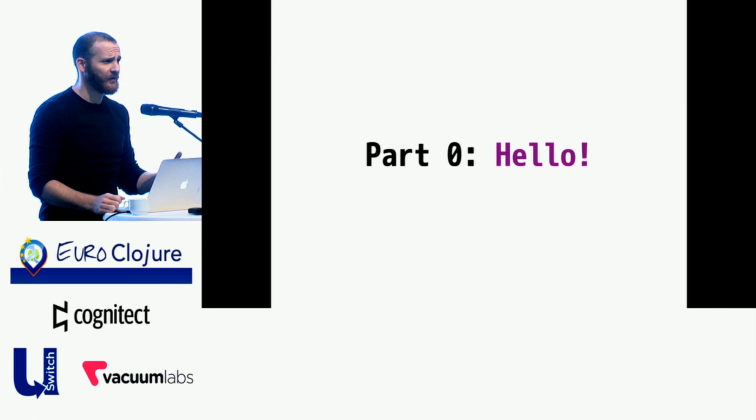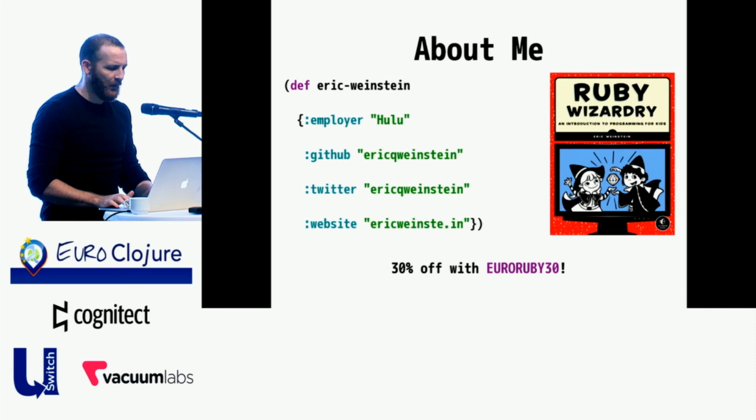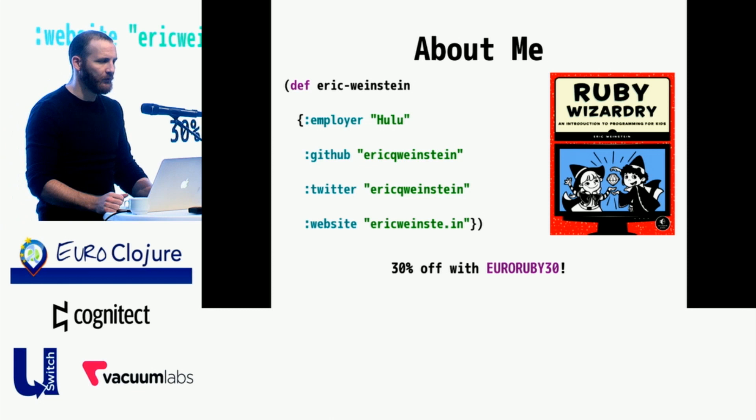I'm just going to talk for about 35 or 40 minutes. My name is Eric Weinstein. I work at Hulu as a senior software engineering lead. You can find me on GitHub, Twitter, the Internet, in this human map that I made. I write a fair amount of Ruby, JavaScript, Python and some Go at work. I write Clojure and Elixir for side projects.